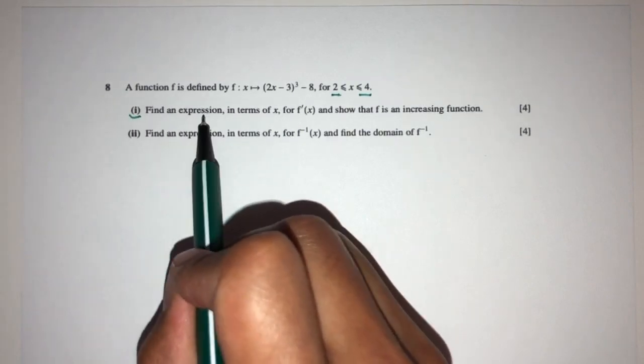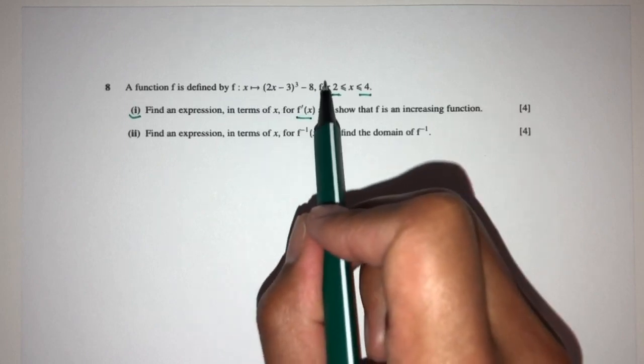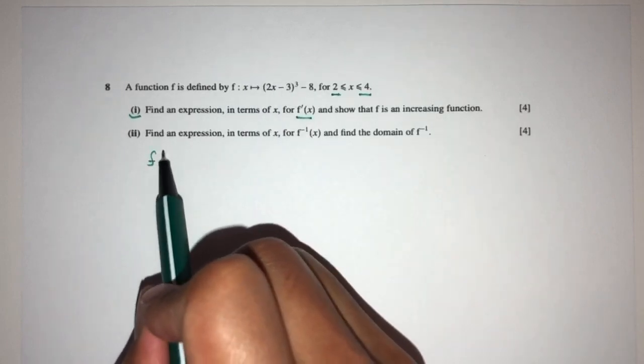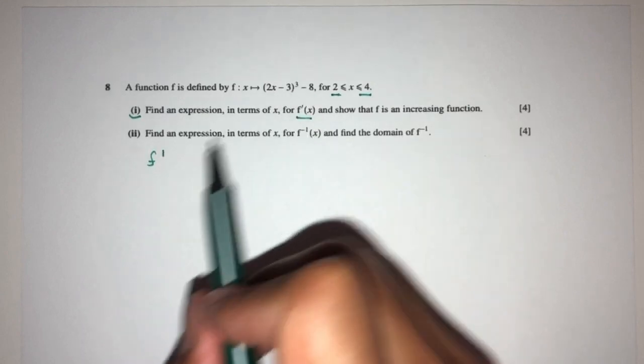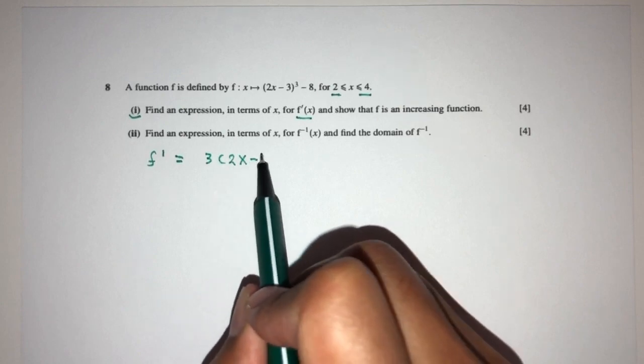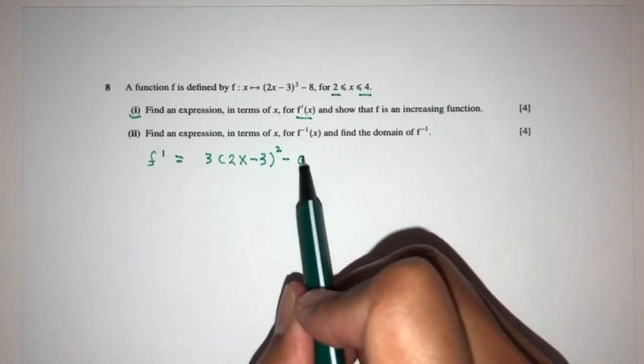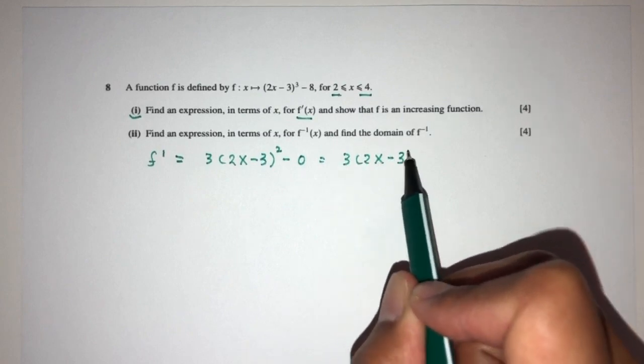Part 1, we have to find an expression in terms of x for f prime. f prime is simply differentiating the value of f(x). So let's do that. f prime will be d/dx of this, that should be 3, first, 2x minus 3, power 2, then that will be 0. So 3(2x - 3) squared.